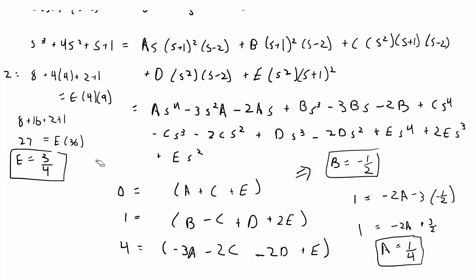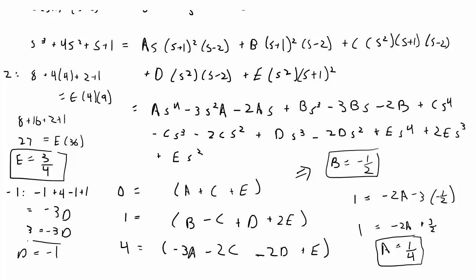Plugging in s = negative 1 isolates D: negative 1 plus 4 minus 1 plus 1 equals negative 3D, so 3 equals negative 3D, giving D equals negative 1. Then using the s⁴ equation: 0 equals 1/4 plus C plus 3/4, so C equals negative 1.